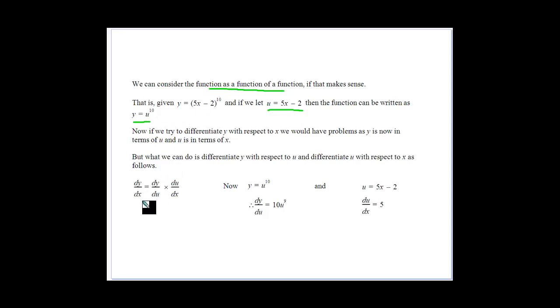What we're going to do is differentiate y with respect to x. But to do that, we need to differentiate y with respect to u, and then differentiate u with respect to x. That's what we call the chain rule. You can see that these will cancel out, so we get dy/dx.